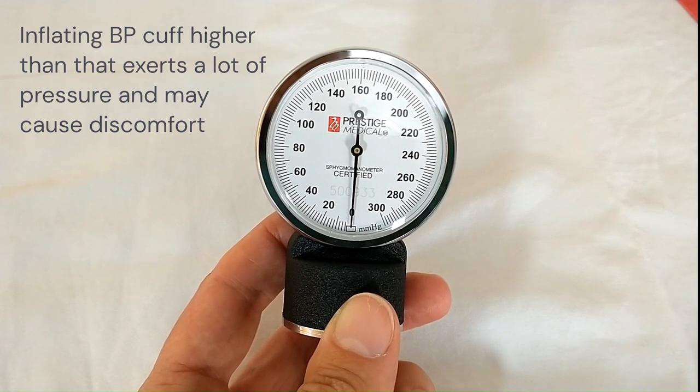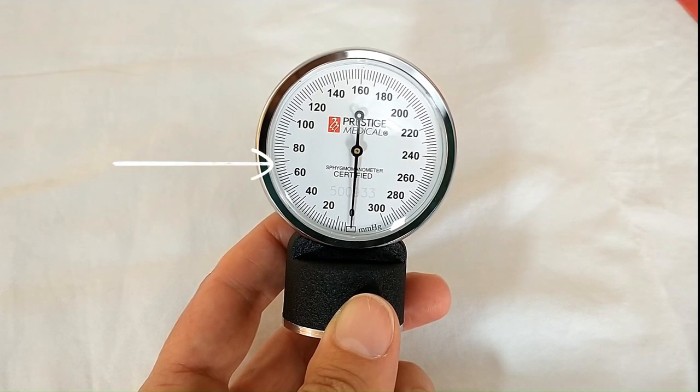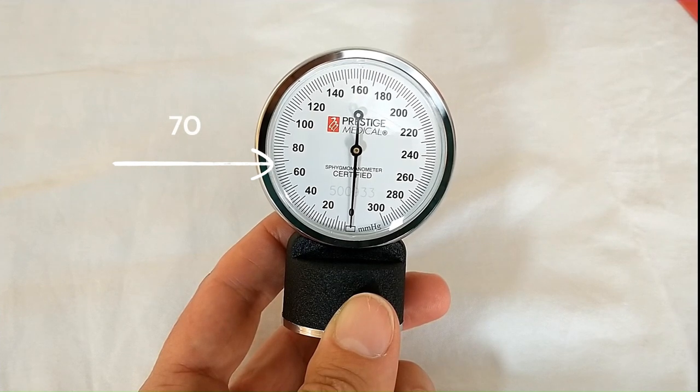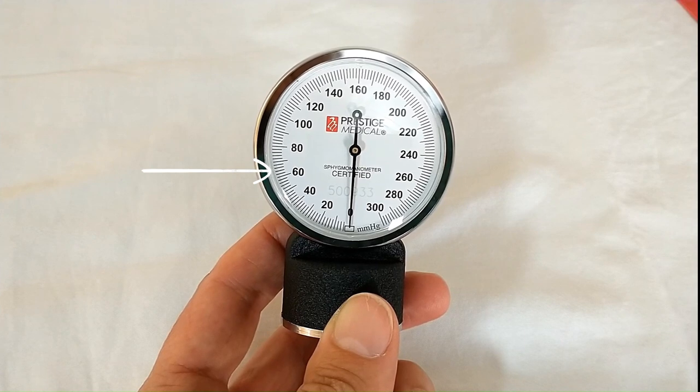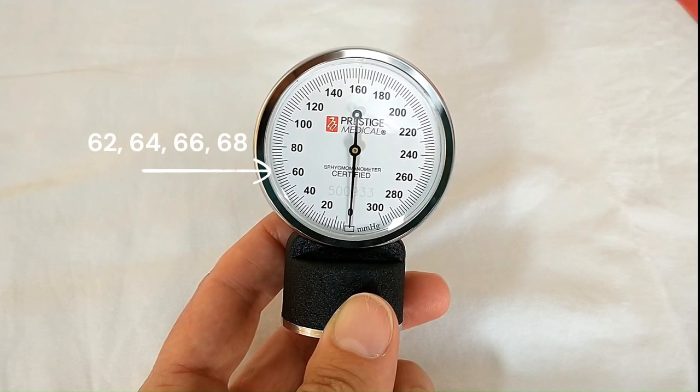Now take a look at the dials in between. So for example, from 60 to 80, there is a bigger line that says seven, that would be 70, and then in between we have smaller lines in increments of two. So that would be 60, 62, 64, 66, 68, and 70.